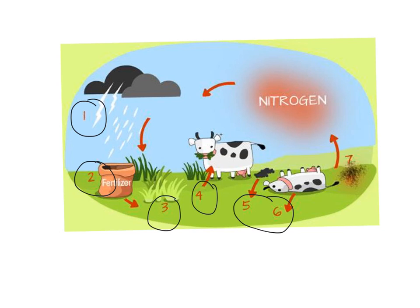Finally, we have step seven. At step seven, bacteria in the soil break down these nitrogen compounds and release nitrogen gas into the atmosphere. And the cycle starts all over again.